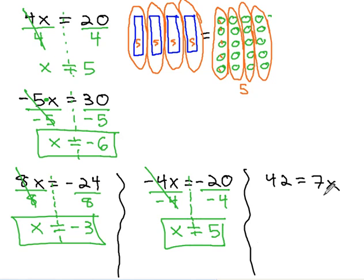Similarly, on the last example, the x is on the other side, but that's okay. We've got 7 x's on one side. We need to divide into 7 groups, so we know what 1 of the x's is. If we divide the right side by 7, we also divide the left side by 7. This gives us x equals 6.